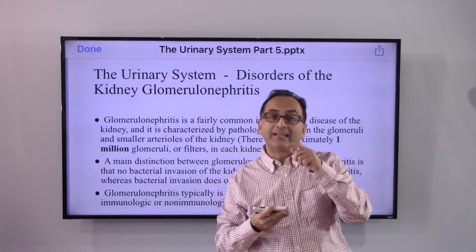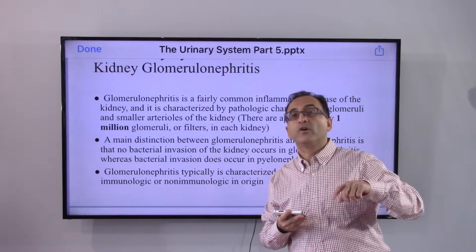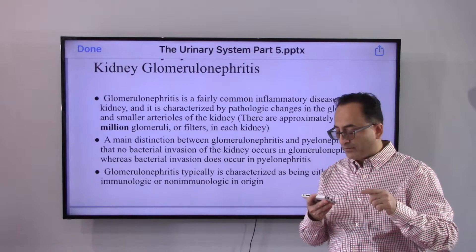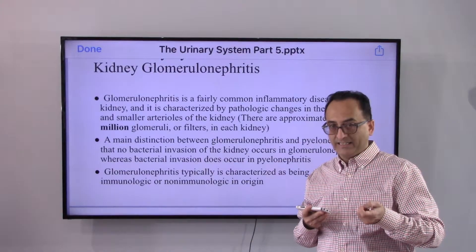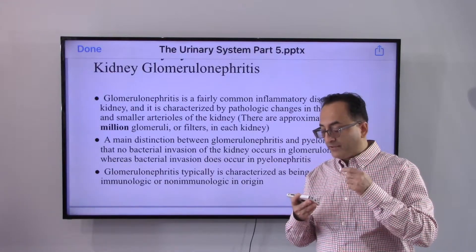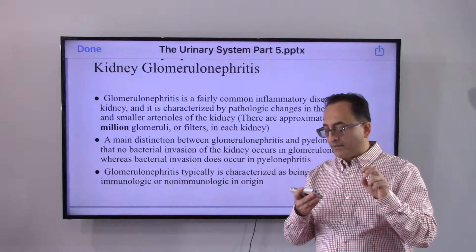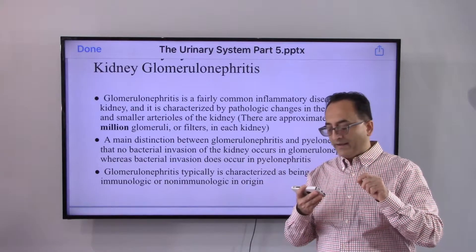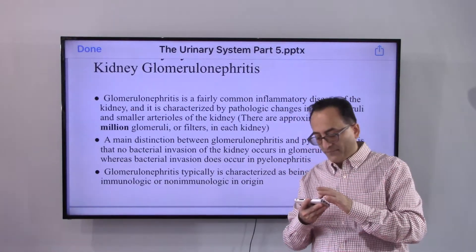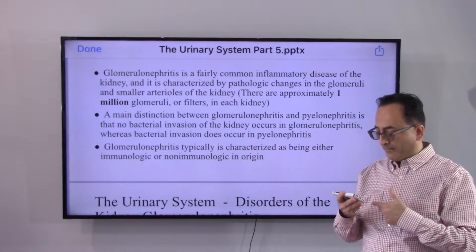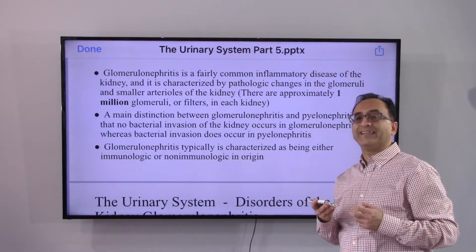There are about 1 million glomeruli or filters in each kidney. The main distinction from our last video is that pyelonephritis is the inflammation of the pelvis of the kidney, whereas glomerulonephritis is inflammation in the tiny filters. There is no bacterial invasion in glomerulonephritis, whereas bacterial invasion does occur in pyelonephritis — that's the biggest pathological difference.